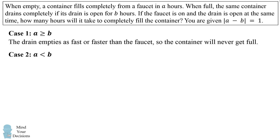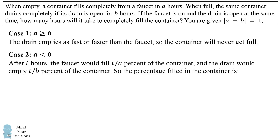The other case is if A is less than B. In that case, after T hours, the faucet would fill T over A percent of the container, and the drain would empty T over B percent of the container. So the percentage filled in the container is the combination of these two fractions: T over A filled minus T over B that gets drained.